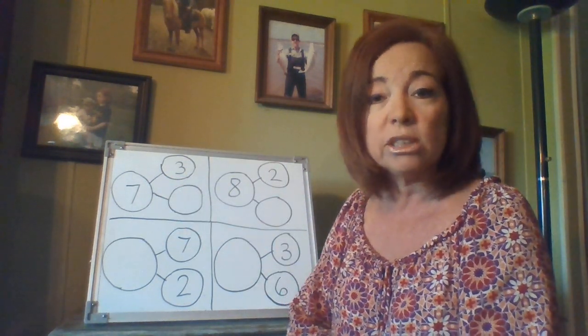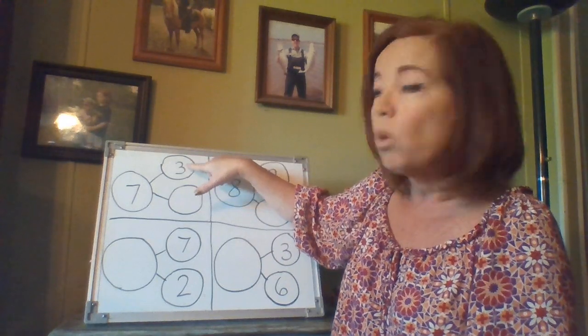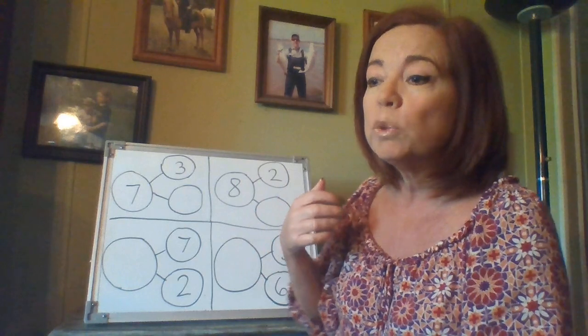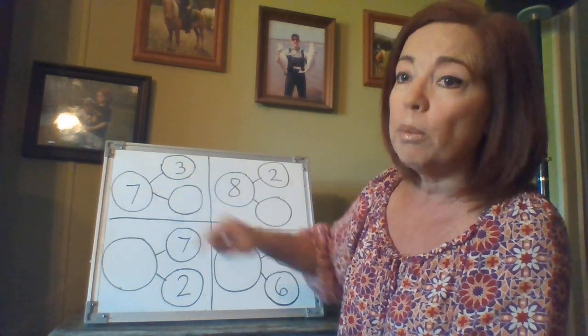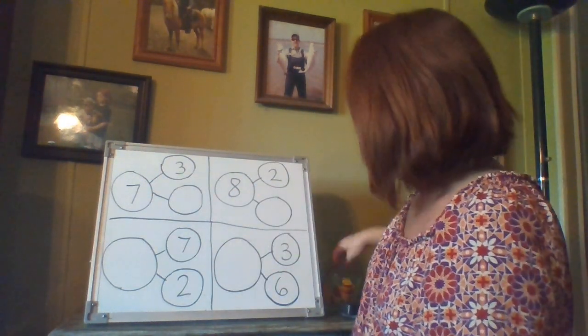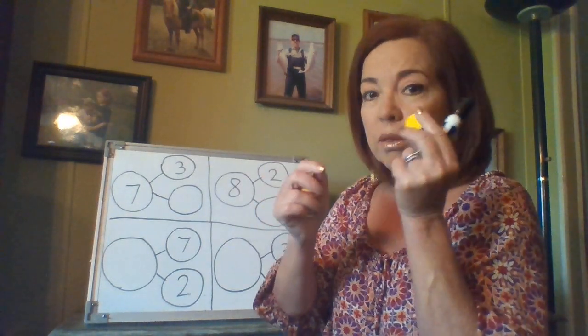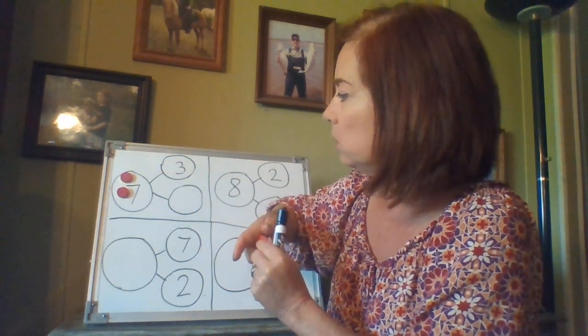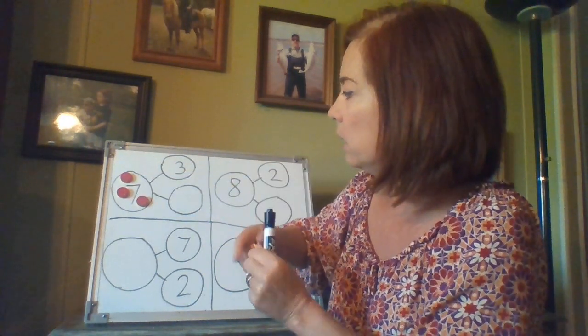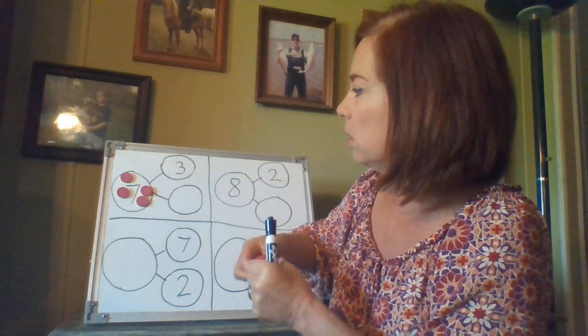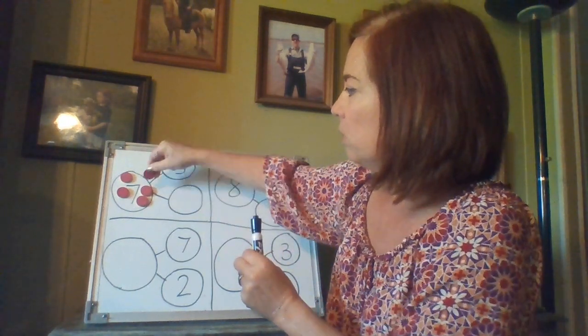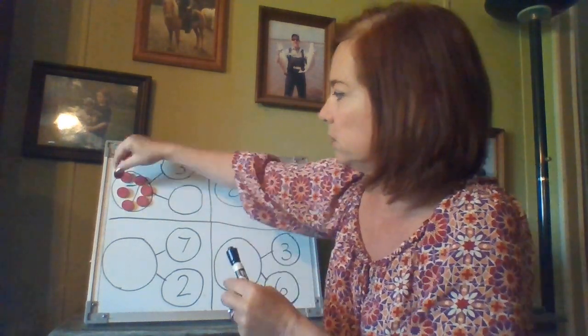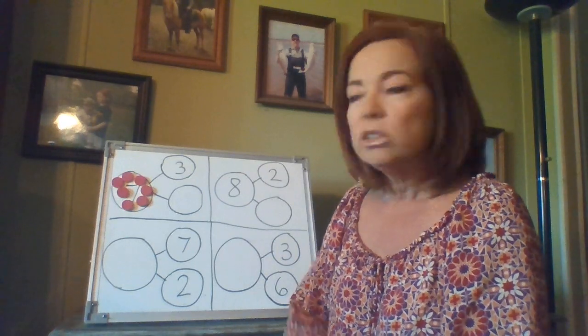So we see in our first one that it has a seven and we see one of the parts is a three but we don't see what the other part is. So boys and girls, we always want to start with our whole number. So there's a seven. So I'm going to go ahead and use these counters and I'm going to put seven counters in there. One, two, three, four, five, six, seven. So there's my seven.